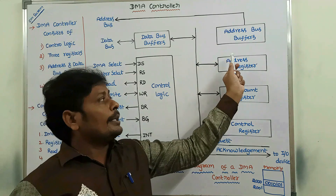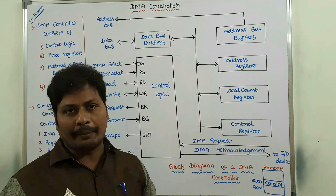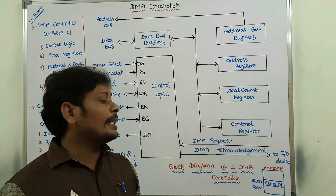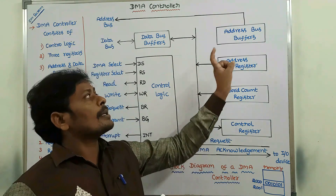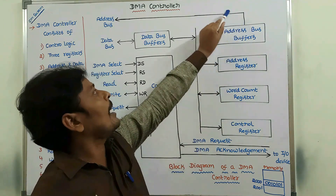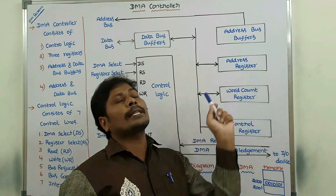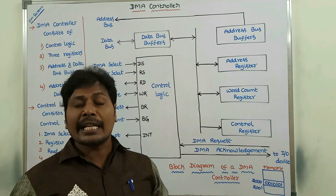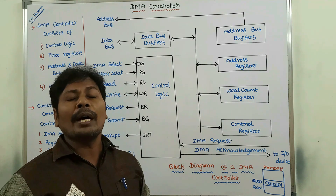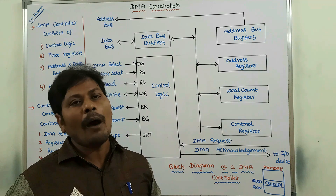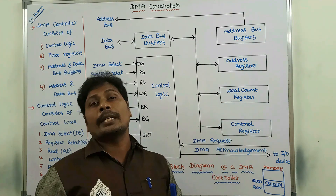The address register holds an address pointing to a specific location in memory. For example, the address register can contain address 2000. This address is passed through the address bus buffers and reaches the address bus. After every word transfer, the address register is incremented by one, pointing to the next location in memory. The word count register holds the number of words to be transferred into memory, and after each word transfer, the word count register is decremented by one.